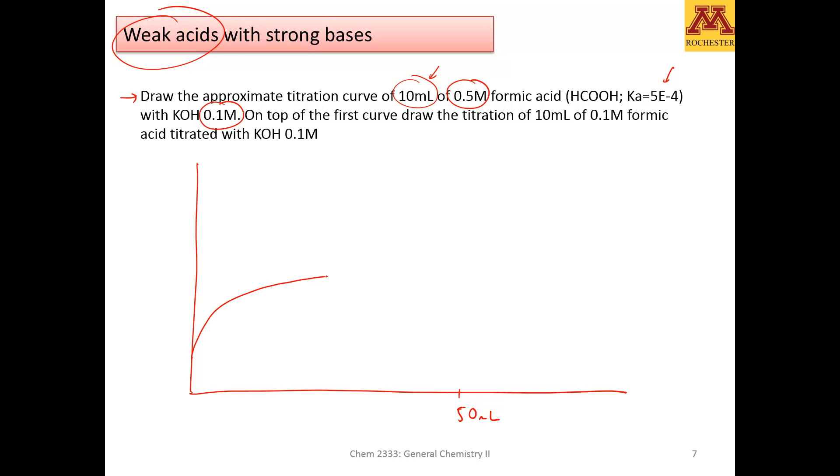If this is 50 milliliters, that will be my equivalence point. So I'm going to draw an approximate curve. Notice also that the pH increases pretty fast when you have weak acids. This is a characteristic of a weak acid. In a strong acid, the curve is lower down here. Actually for the same concentration, it would decrease even lower.